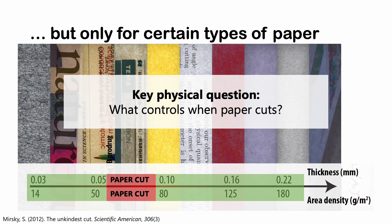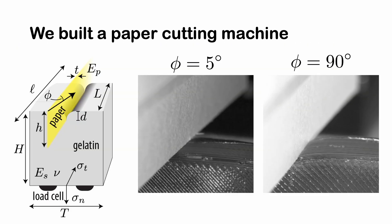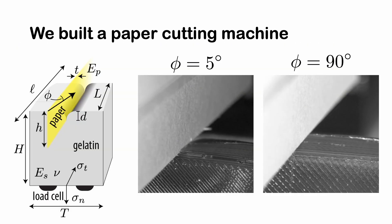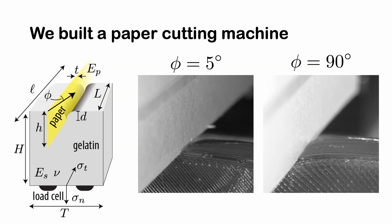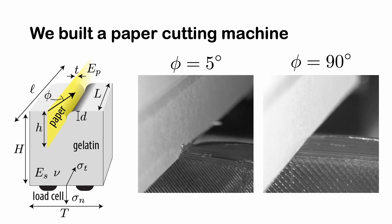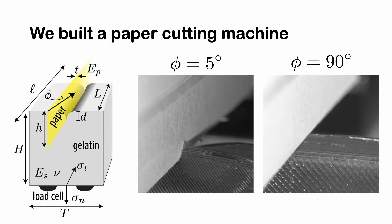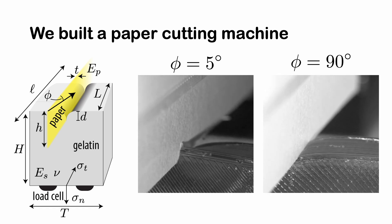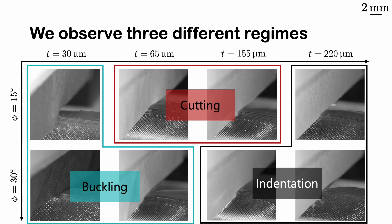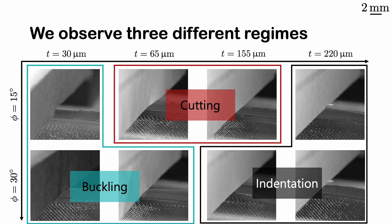What are the physical mechanisms that control paper cuts? To address this question, we built a paper cutting machine. We can get data on cutting as a function of thickness and angle. Three things can happen: cutting, buckling, or indentation.